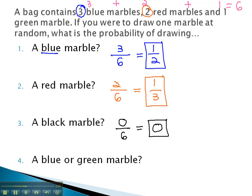How about this one? A blue or green marble? Well, there are 3 blue marbles in the bag, and there is 1 green marble in the bag. So if we want blue or green, how many total would we be happy with? Well, 3 plus 1 is 4 out of the 6 total possibilities. And that reduces down to 2 thirds.